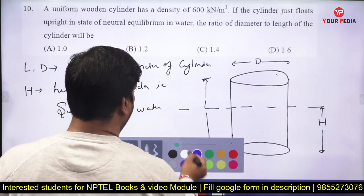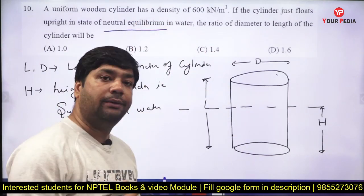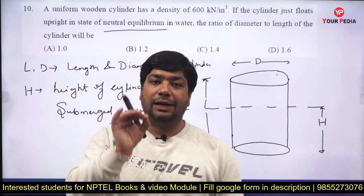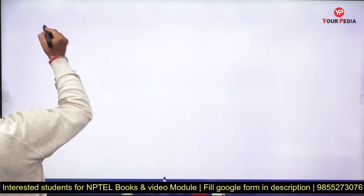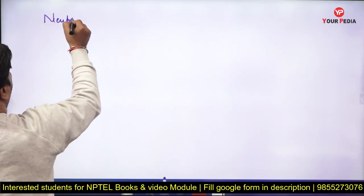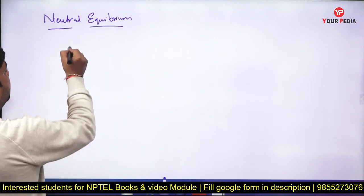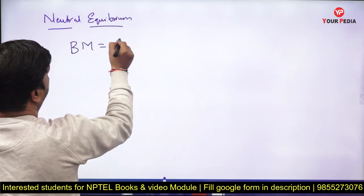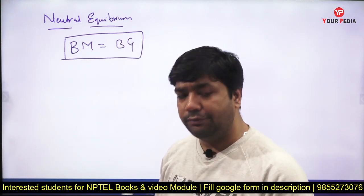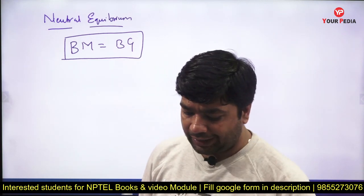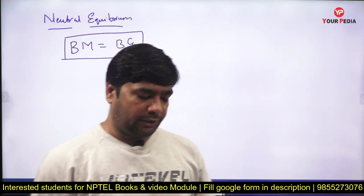The question asks about neutral equilibrium. We need to know what neutral equilibrium means and how to find the metacenter. The condition of neutral equilibrium is when BM equals BG. BM is the metacentric radius, found by I minimum divided by the volume of fluid displaced. BG is the difference between the center of gravity and the center of buoyancy.